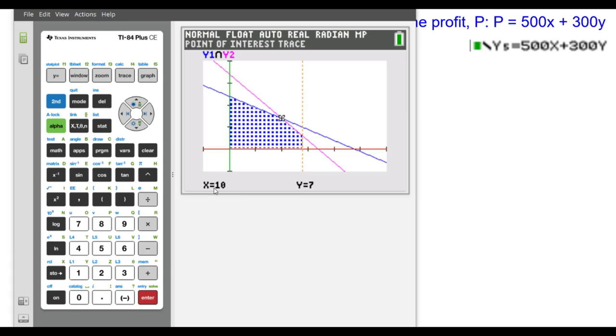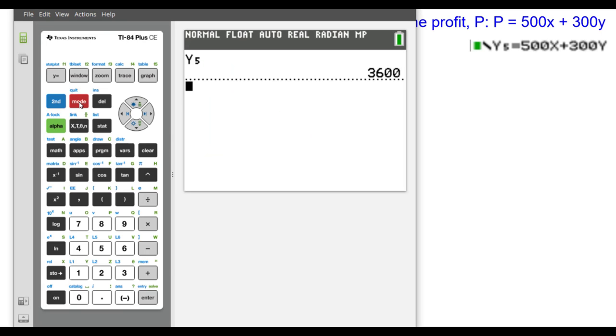Here I have the next ordered pair for this corner. And I'll evaluate Y5 with that value.